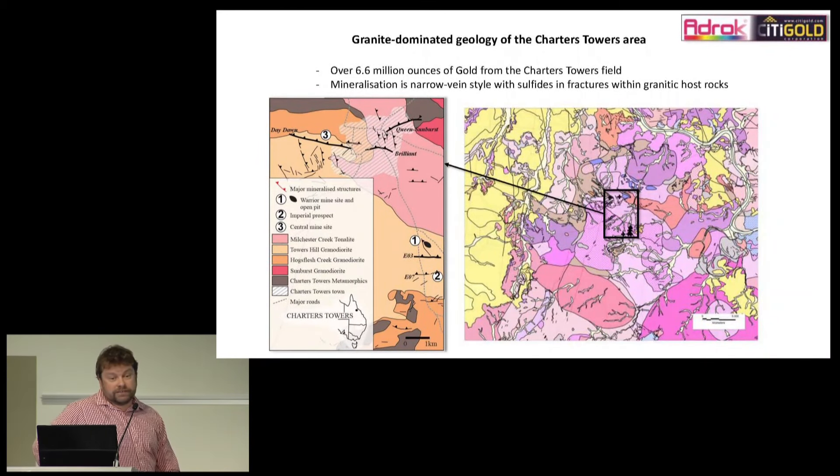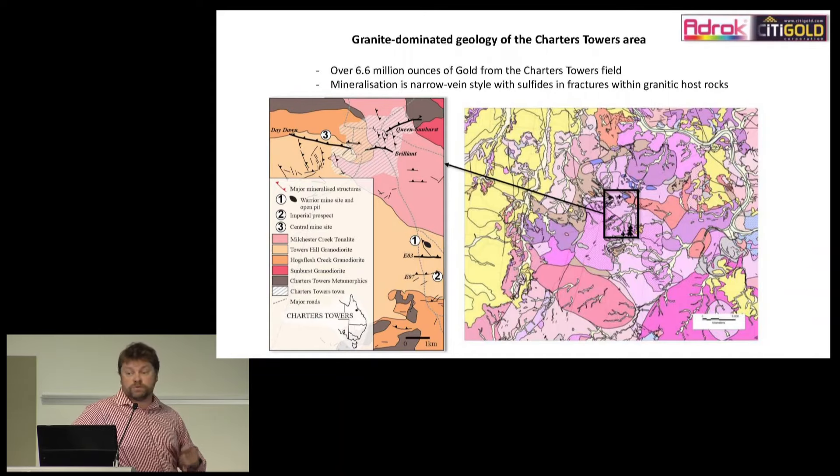Charters Towers is a historical gold field. It's produced about six and a half to eight million ounces of gold already, mostly operational in the late 1800s, early 1900s. Citigold's had a mine that's produced about 50,000 ounces and the target is to go back into the central area underneath Charters Towers and expand on the historical mining operations. Importantly, the area is dominated by granite. All these purple blobs you see on the geological map are granites that range in composition from tonalites to granite diorites. It's a one rock-type dominated area. We don't have layered volcanics, we don't have folded sedimentary sequence.